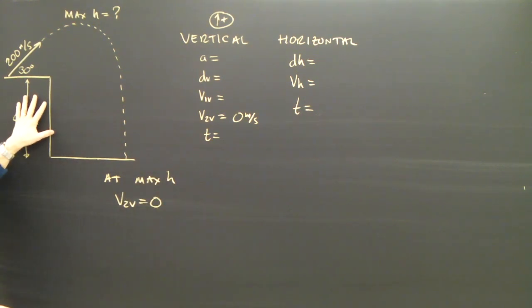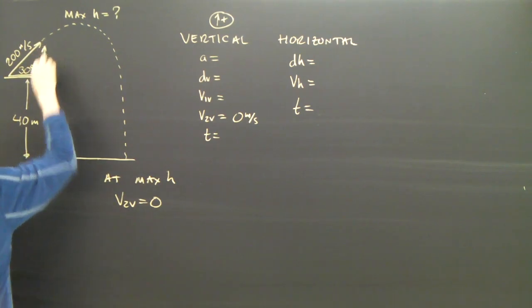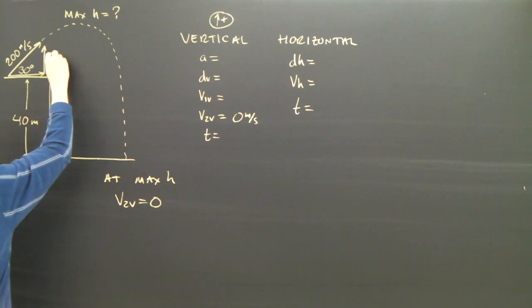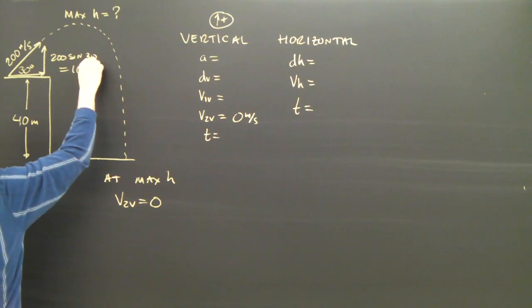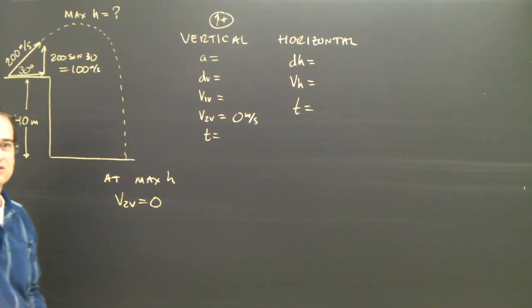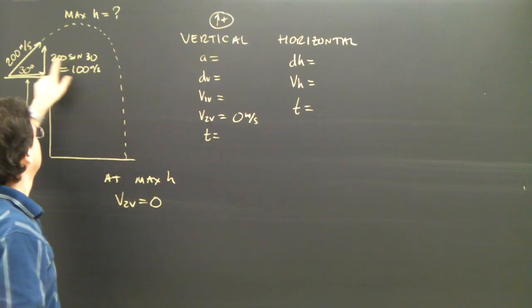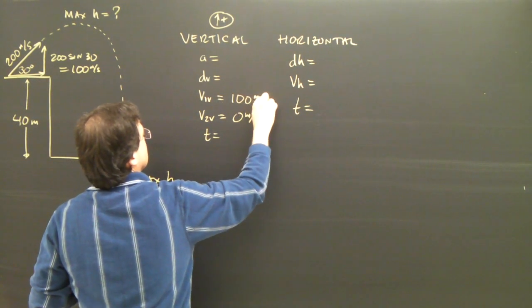So I'm really not interested in this 40 meters. I'm really interested in what happens from here up to the top. So I have to split this into components. This vertical component is 200 times the sine of 30, which equals 100 meters per second. So even though it's being projected at 200 meters per second that way, the initial vertical velocity is 100 meters per second.